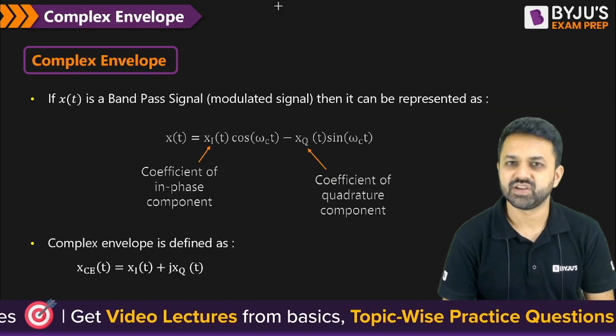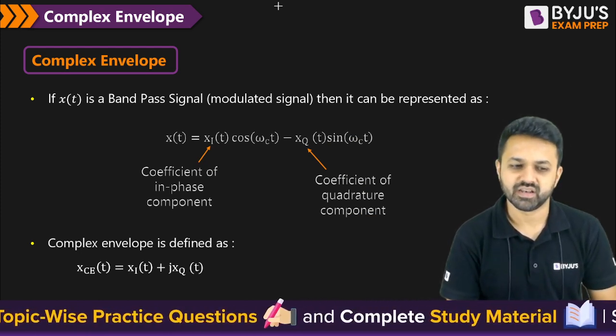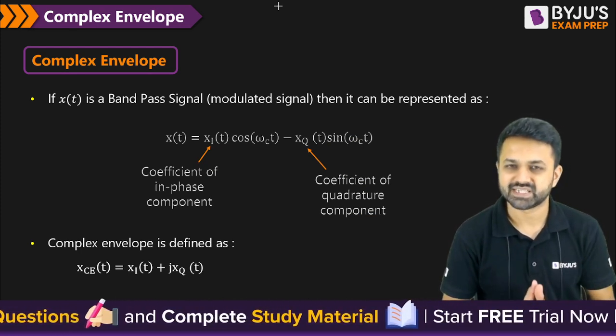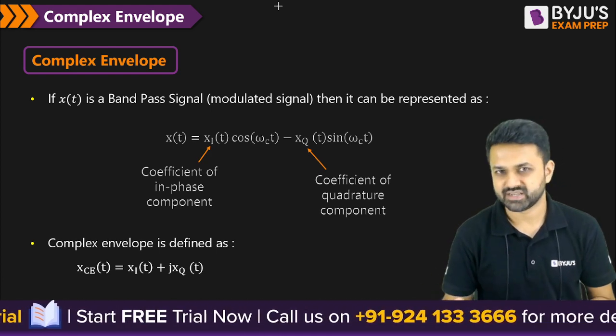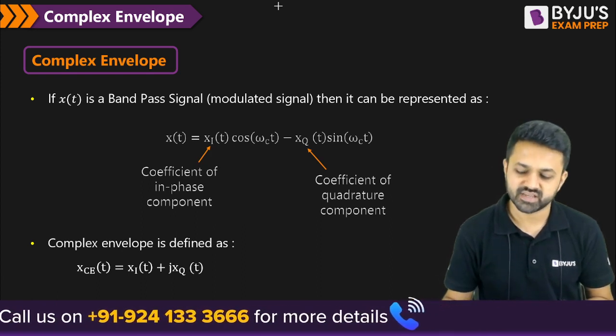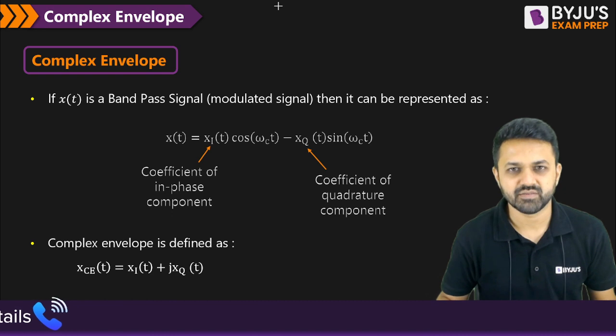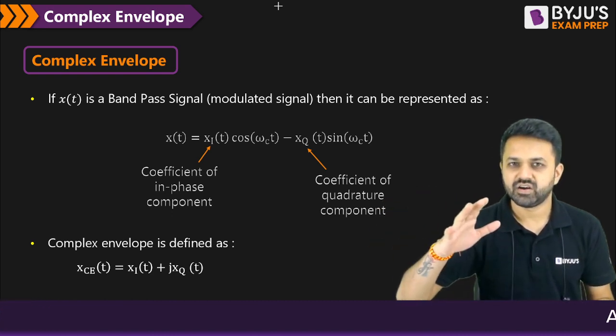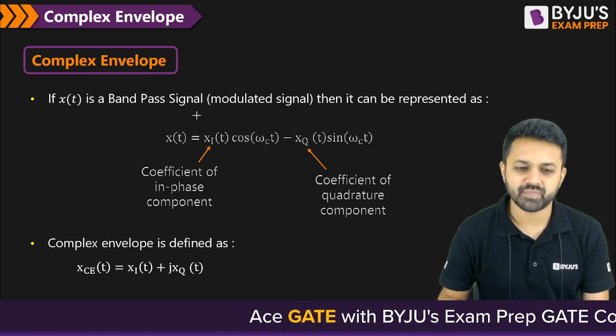Now coming to the complex envelope, we generally calculate the complex envelope only for a bandpass signal. So if you have any bandpass signal, because we know that any modulated signal or bandpass signal like amplitude modulated or frequency modulated or any other modulated signal are called as a bandpass signal. Because we translate the lower frequency signal into higher frequency signal.